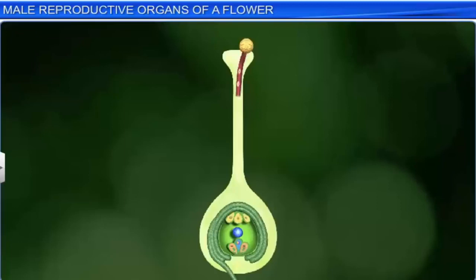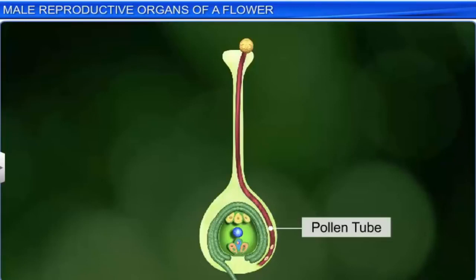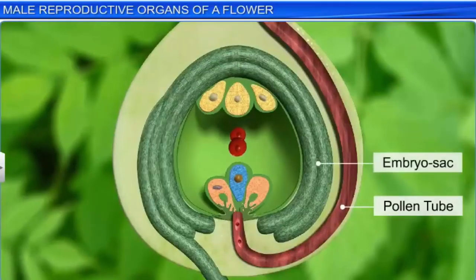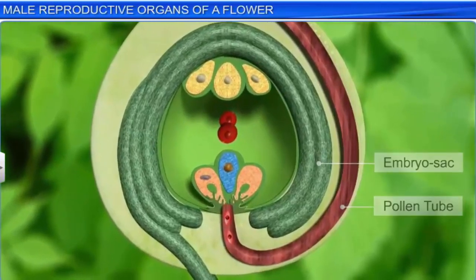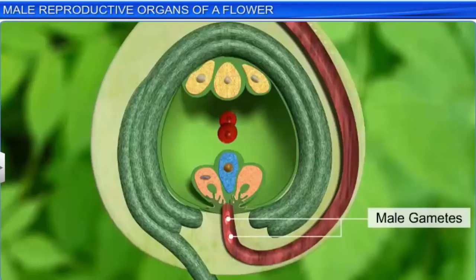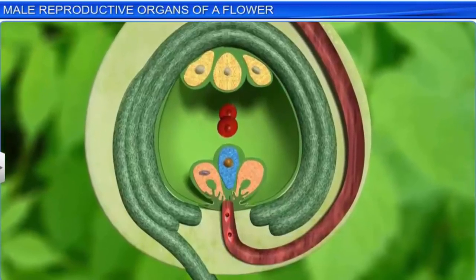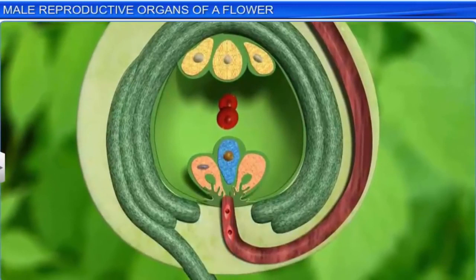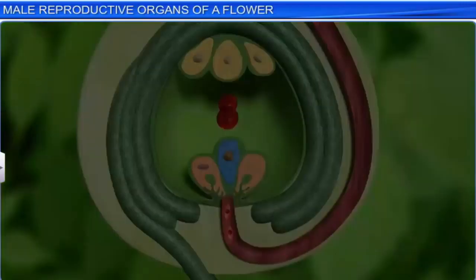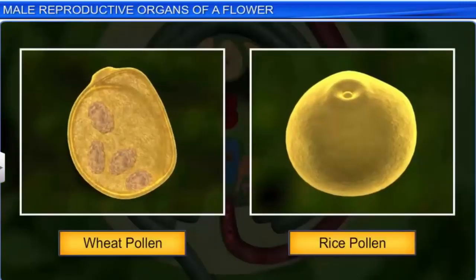When pollen grains land on the stigma, they germinate into a pollen tube that carries the male gametes towards the embryo sac. This ability of the pollen grain to deliver the male gametes to the embryo sac is called pollen viability. However, factors such as temperature and humidity affect pollen viability. Moreover, pollen grains of different plants have different periods of viability.